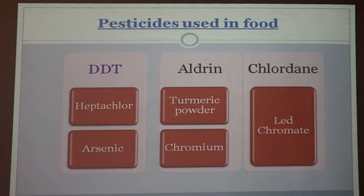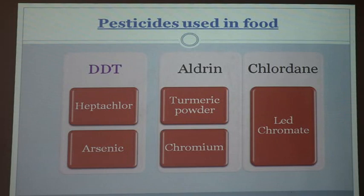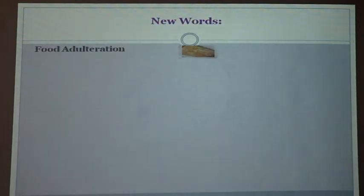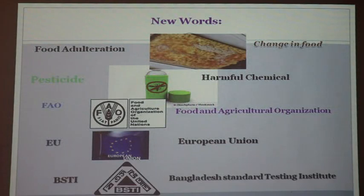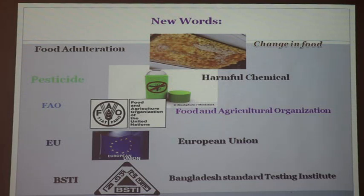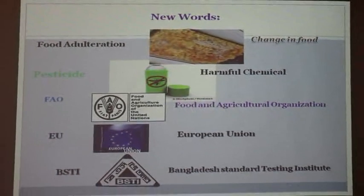Pesticides are used time to time in food items. The names of common pesticides include: DDT, Heptachlor, Arsenic, Turberic powder, Chromium, and Lethcromate. Now we will be acquainted with different new words from this text: adulteration means change in food; pesticides means harmful chemicals; FAO stands for Food and Agricultural Organization; EU stands for European Union; and BSTI stands for Bangladesh Standard Testing Institute.